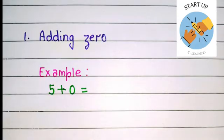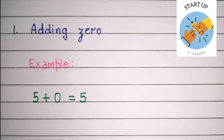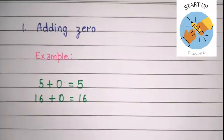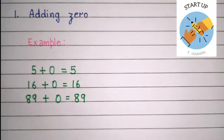It means when you add zero to any number, the sum is the number itself. See this example: 5 plus 0 is equal to 5. Next example is 16 plus 0 is equal to 16. The third example is 89 plus 0 is equal to 89. So we have seen when we have added zero to these numbers, the sum is the number itself.